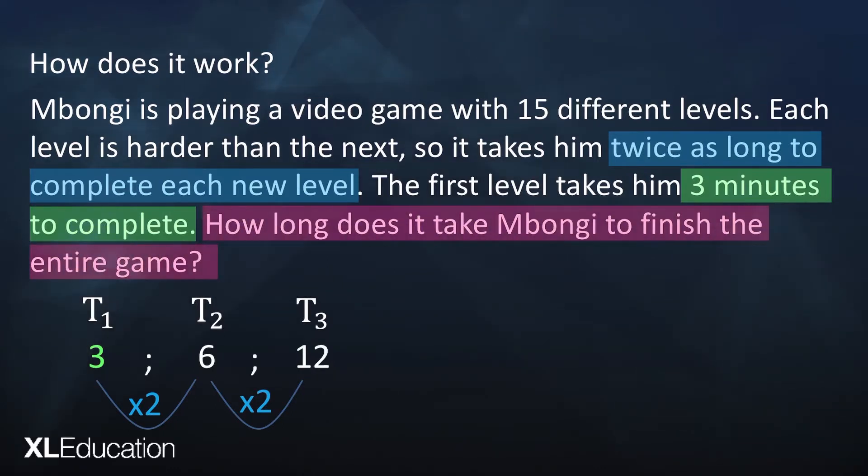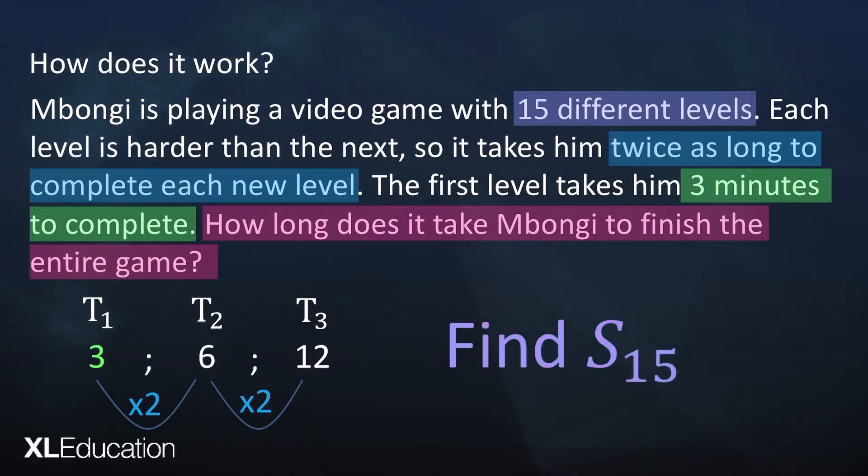Now we want to know how long it takes him to finish the game, so we've got to find Sn. But there are 15 levels, so there are 15 terms that we're adding up. So we're finding S15.